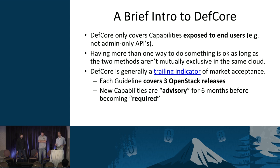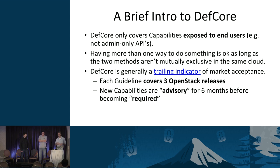When we add new capabilities to the guidelines over time, there's a waiting period. We have to put them into advisory status for six months, and then in the next guideline they can actually be required. The purpose is to give vendors a heads up that something is coming and is going to be required, giving them time to make adjustments. As a public cloud, you may have to change configs, deal with storage issues, or network redesign. The six-month period gives vendors a heads up and gives users a chance to chime in.